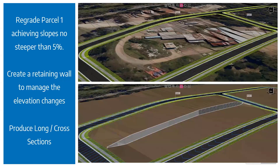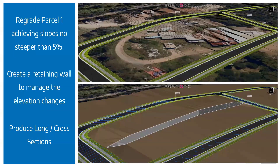Today we're going to be focusing on three core areas. We're looking at this particular parcel of land — this is pre-development, this is post-development, this is parcel one. What we're looking to do is achieve slopes no steeper than 5% through this particular parcel. By doing so, we're going to employ the creation of a retaining wall to manage the elevational changes. Manually you could probably do this right now, working out the elevations yourself, but we're going to let the software take the brunt of the hard work, including marrying up to the road design at either end.